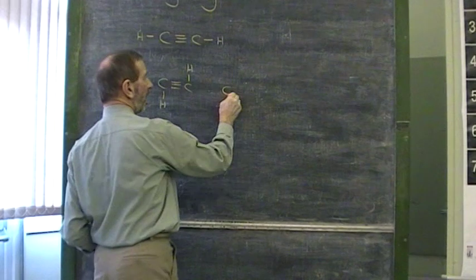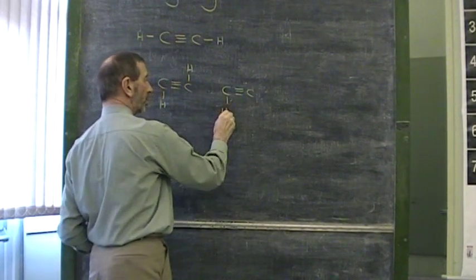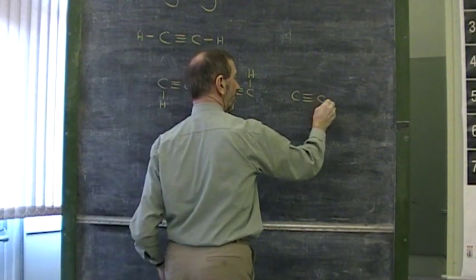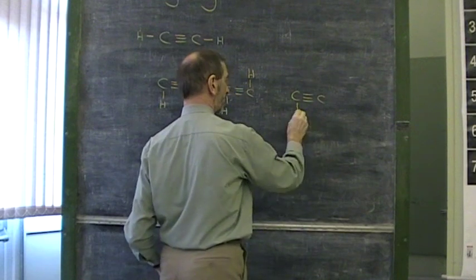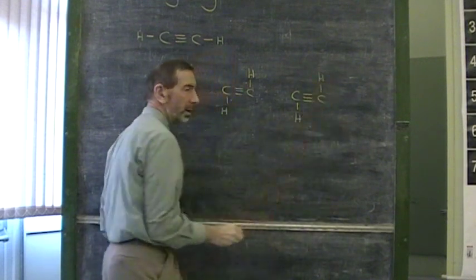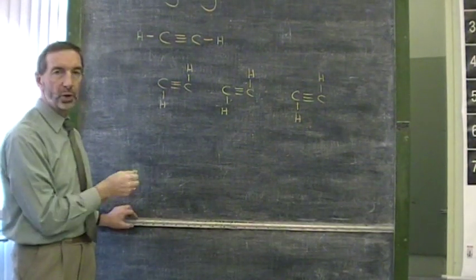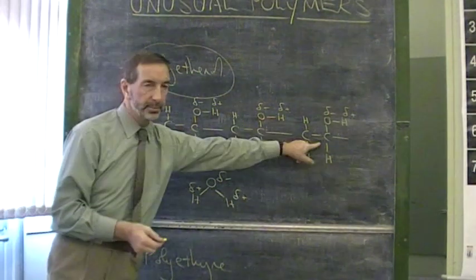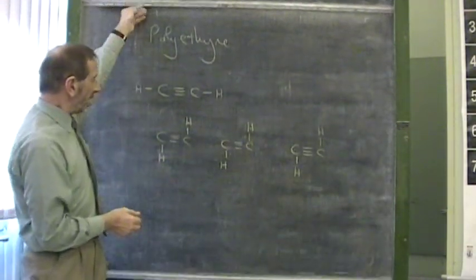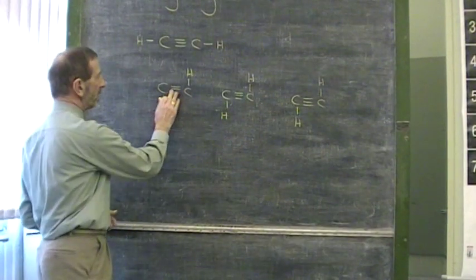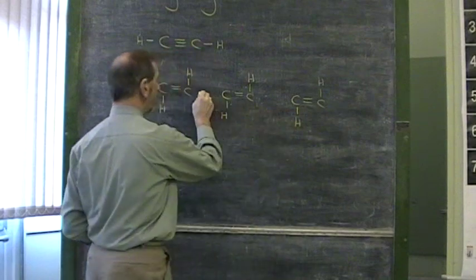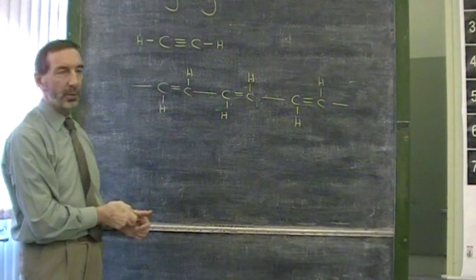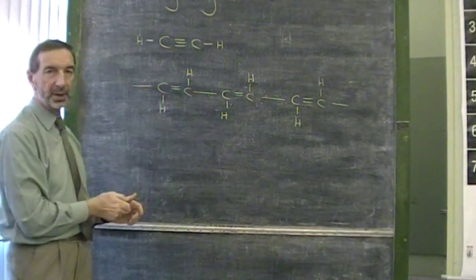Let's draw some other ethyne monomers. When we polymerize these, we'll get a polymer. Let's see what the polymer looks like. Now, normally we're going from a double bond to a single bond. In the previous example, we ended up with single bonds. Here, however, because we're starting with a triple bond, the triple bond breaks, the individual monomers join together and we have a polymer which is still unsaturated. It contains carbon to carbon double bonds.